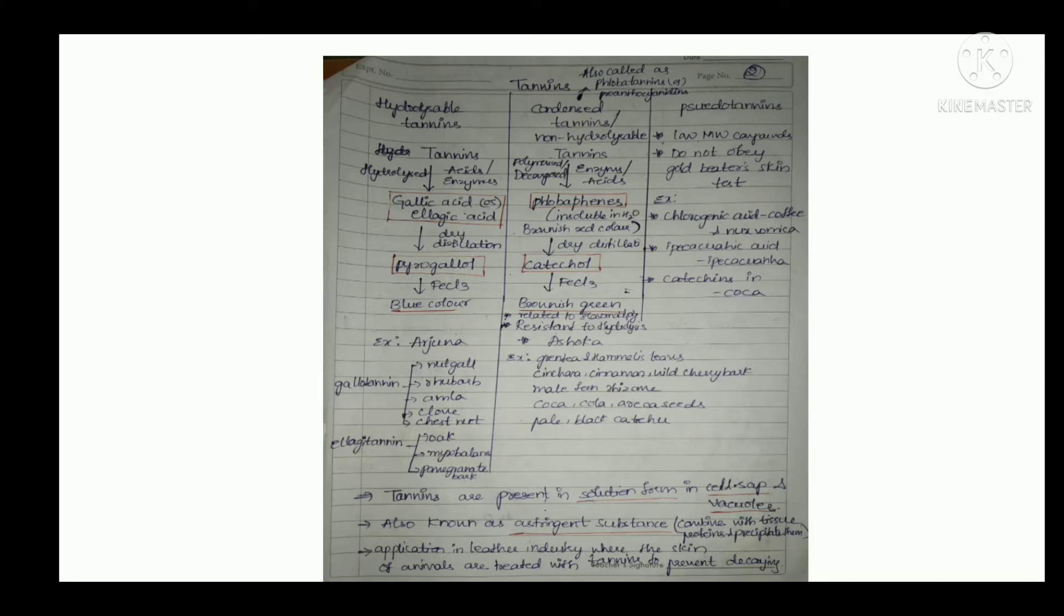These are the examples. Here we can see condensed tannins, which are also called non-hydrolyzable tannins, phlobatannins, or proanthocyanidins. In this, the tannins are not hydrolyzed by acids or enzymes. Instead, they are polymerized or decomposed into phlobatannins which are insoluble in water and appear as brownish red in color.